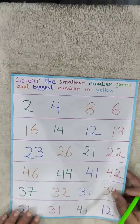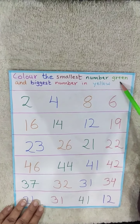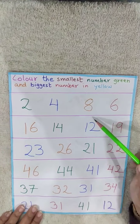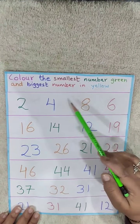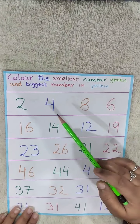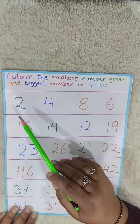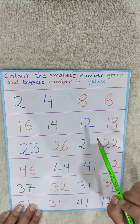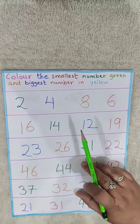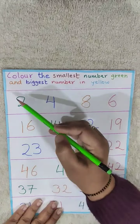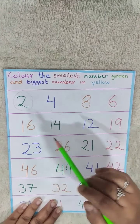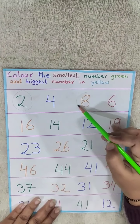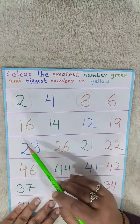Now here is a worksheet. Color the smallest number green and the biggest number yellow. There are some numbers in each row. In the first row: 2, 4, 8, 6. As I told you, start counting — whatever comes first is the smallest. So 2 is the smallest; we will circle it and color it green. And 8 is the biggest, so we will circle it and color it yellow.